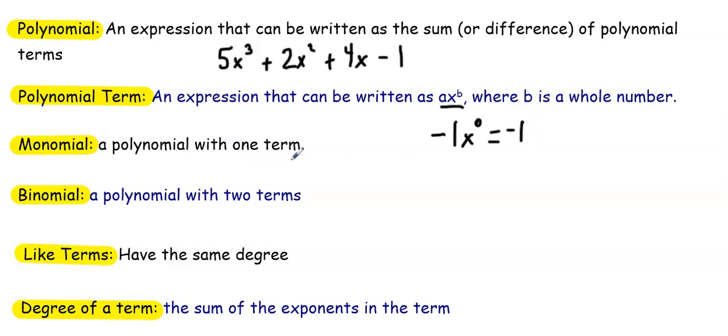A monomial is a polynomial with one term, such as 5x or 3 or -2x². A binomial is a polynomial with two terms, for example x + 2, but binomials could also be x² - 4, or any polynomial that has two terms.